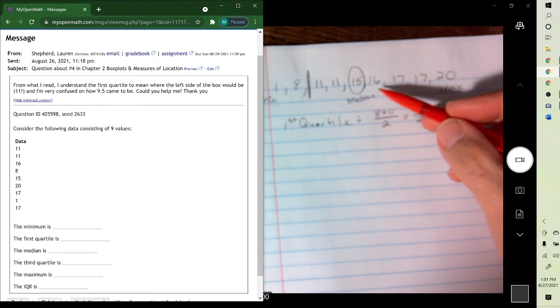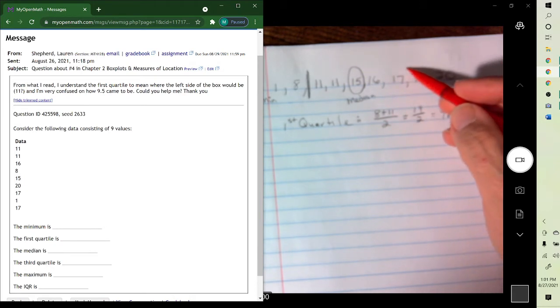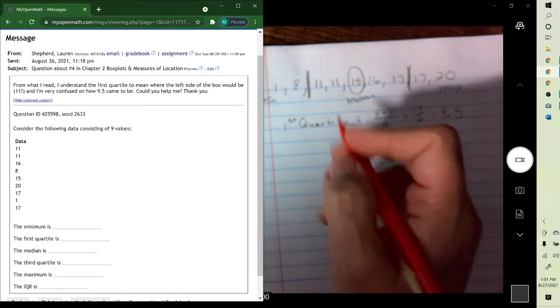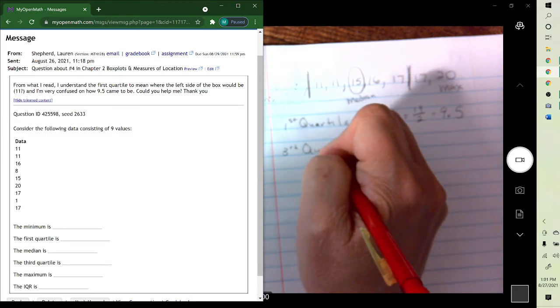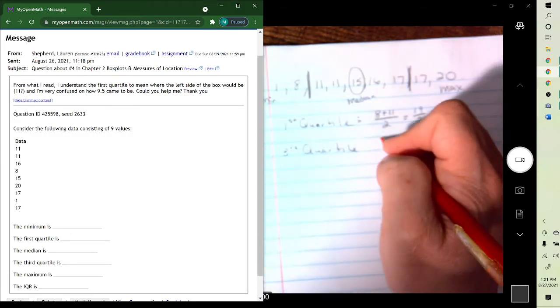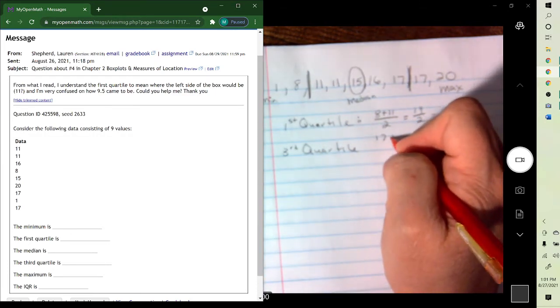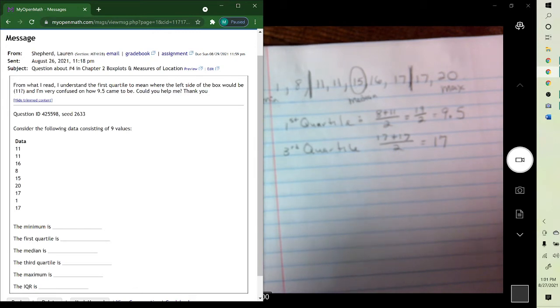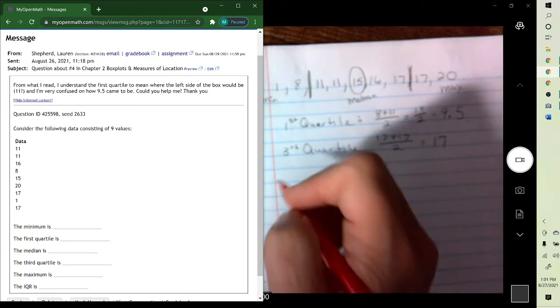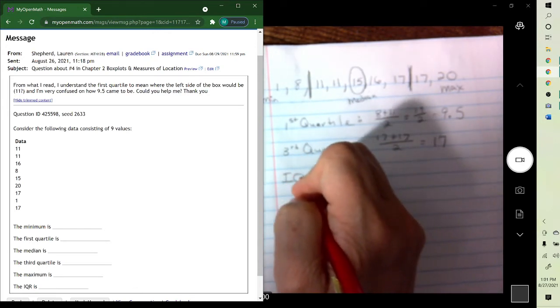And then halfway here would be between the two 17s. So it would be 17 plus 17 over 2, which is just 17. And then the last one, IQR, you just subtract these two.